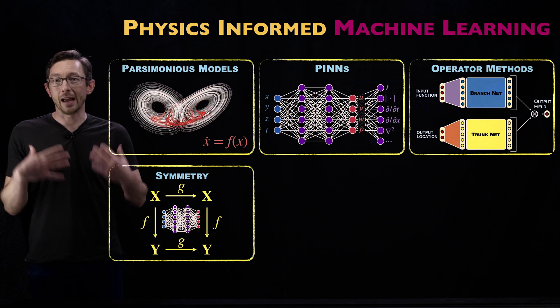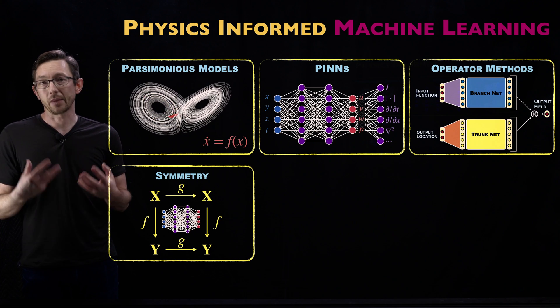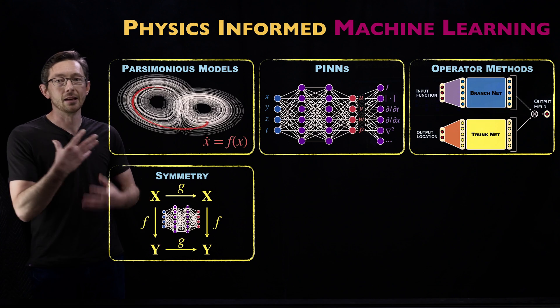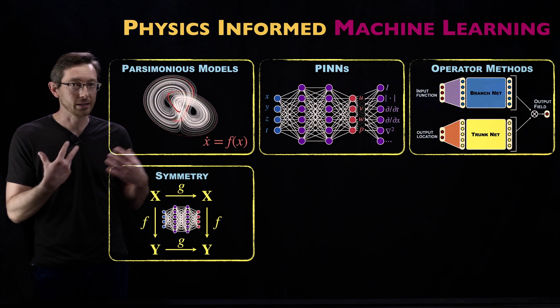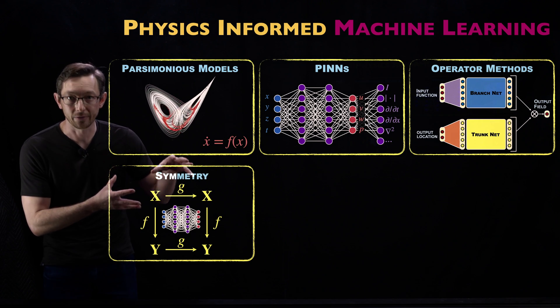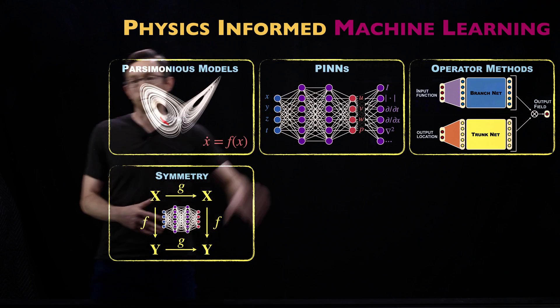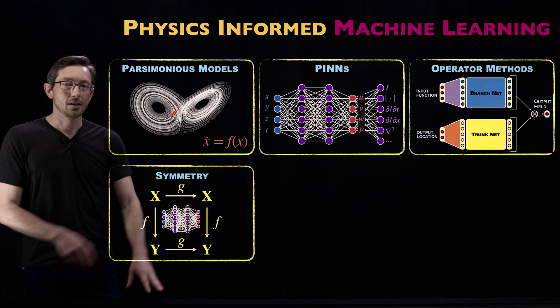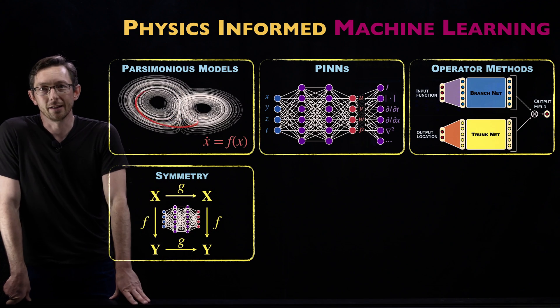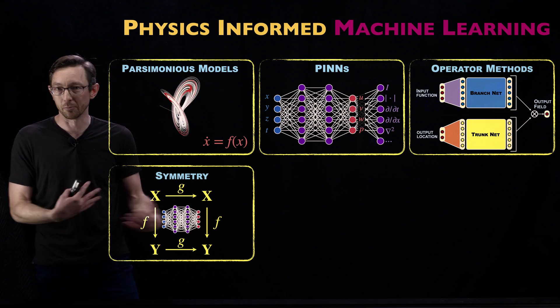My first lab I ever worked in when I was an undergrad at Caltech was with Jerry Marsden. Jerry was one of the pioneers in understanding symmetries in physical systems and mathematical modeling. A lot of those ideas developed in the computational and analytical physics era are now equally or more relevant in the machine learning era. Symmetries really make a big difference in machine learning algorithms.